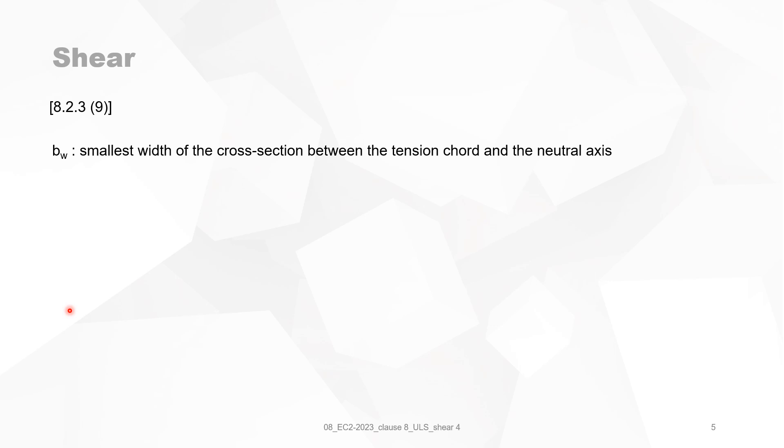Then something about the width of the section, BW. The definition is that it is the smallest width of the cross section between the tension cord and the neutral axis. Then the code gives you two drawings, two cases, and BW is indicated on the drawing.